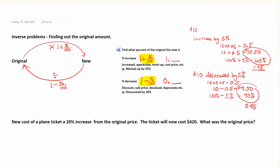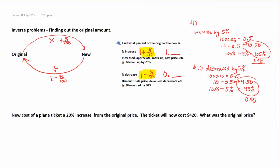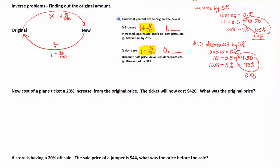So again, if you're going from the original to a new price and somebody tells you you're increasing by some amount, you just multiply. If you're working backwards, you just divide. The new cost of a plane ticket is a 20% increase from the original price. The ticket will now cost $240. What was the original price? A lot of people want to think they'll just find 20% of the new price and work backwards, but it does not work out that way.